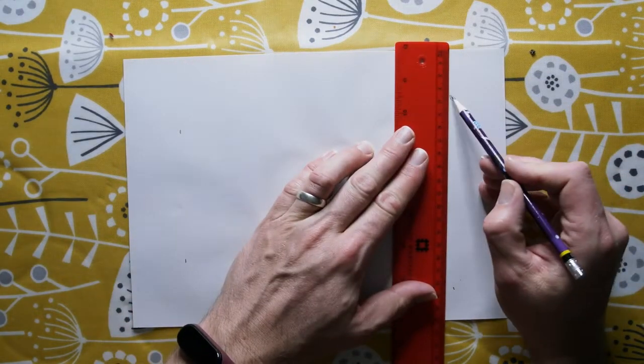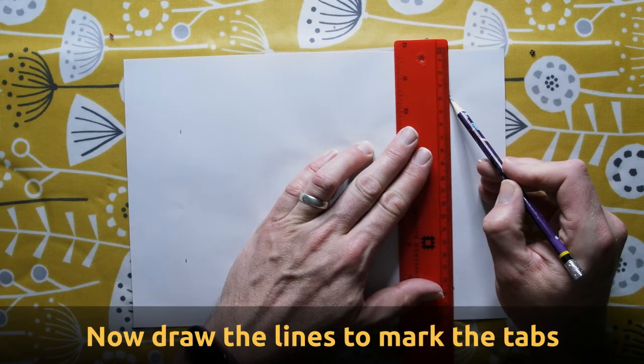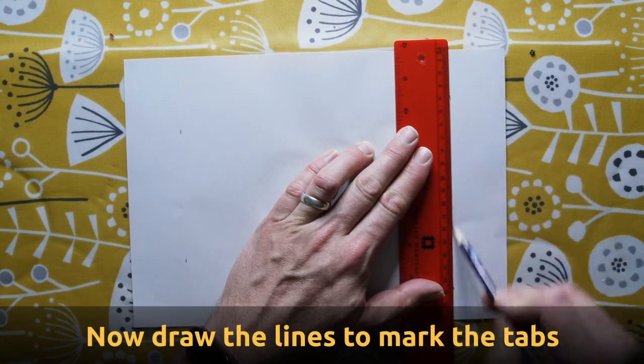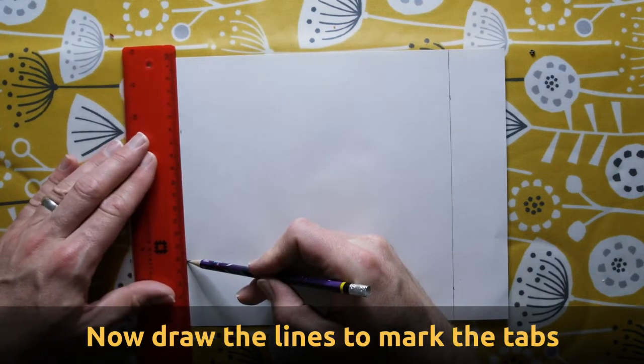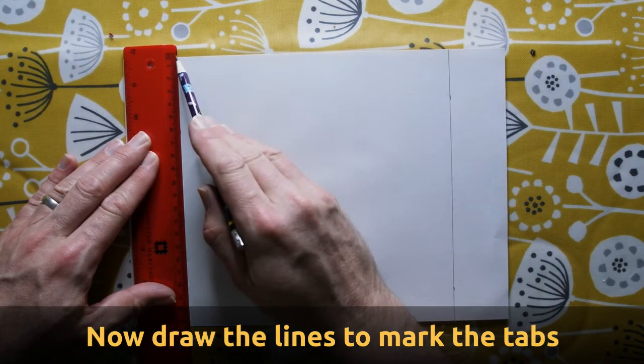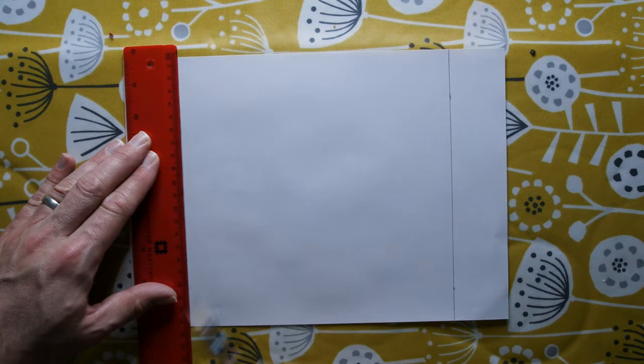Then we draw the lines that will later become the tabs to follow our key one. One goes down there. And one goes down there.